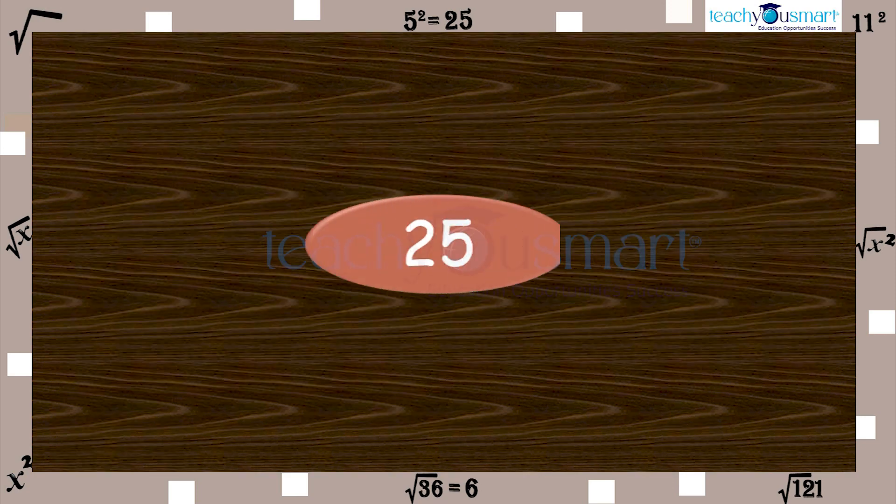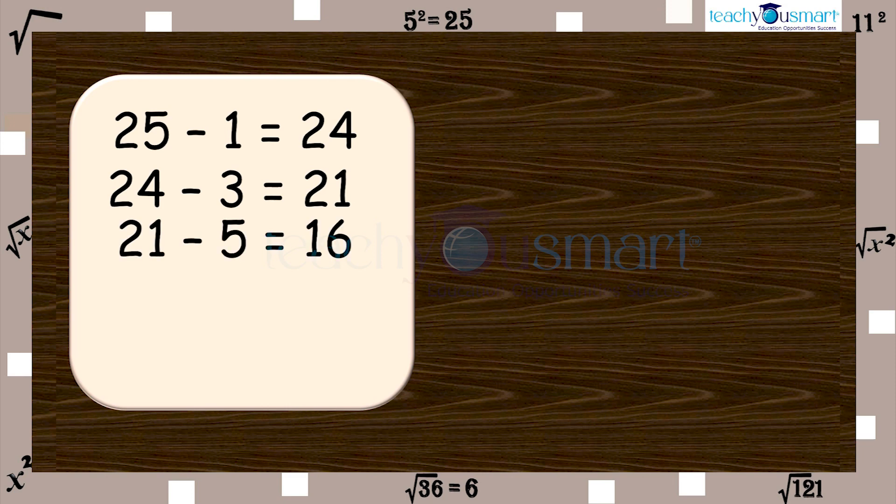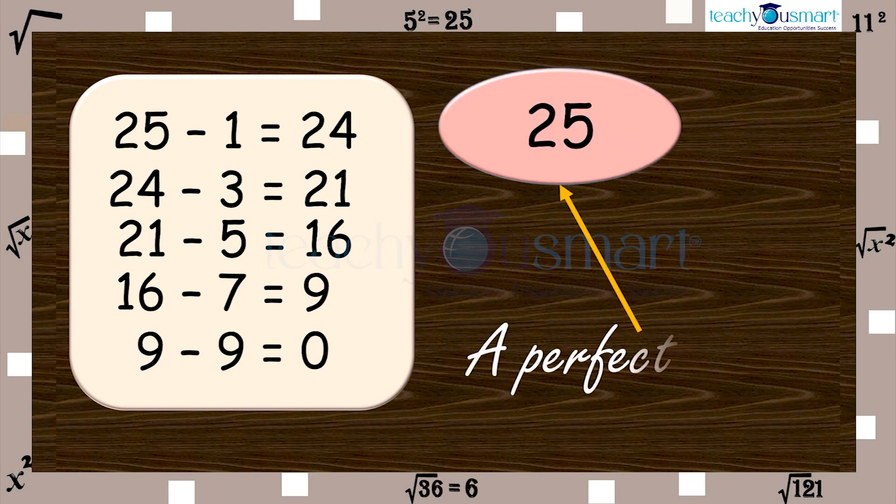Consider the number 25, successively subtract odd numbers starting with one from 25. We get 25 minus 1 equals 24, 24 minus 3 equals 21, 21 minus 5 equals 16, 16 minus 7 equals 9, 9 minus 9 equals 0. This means 25 equals 1 plus 3 plus 5 plus 7 plus 9, also 25 is a perfect square.